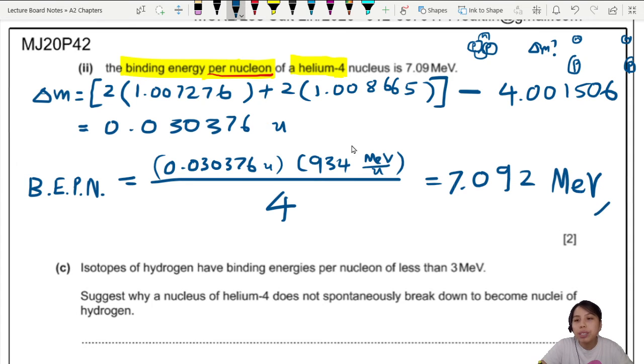Yay, proven, shown. That's what they want us to show. So if you manage to get that, that's one mark. If you didn't, but you manage to get mass defect, that's another mark.